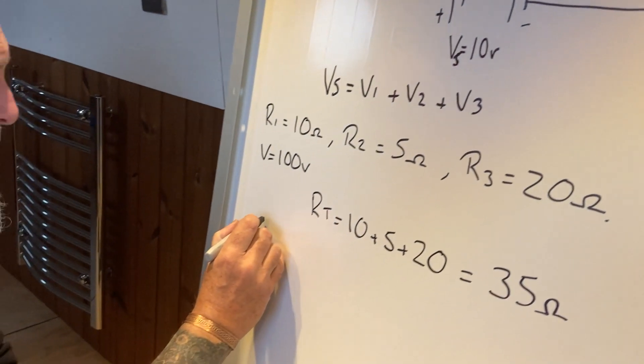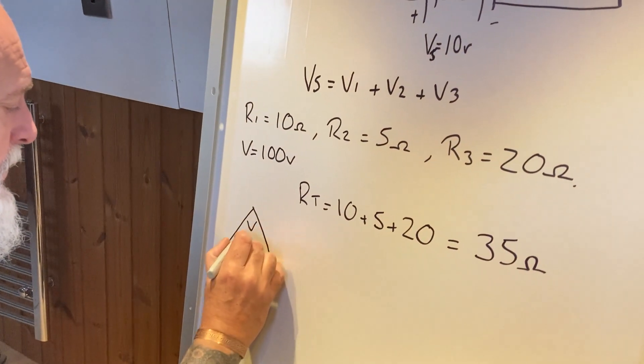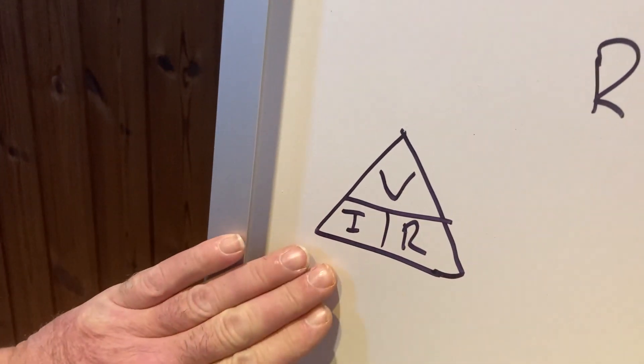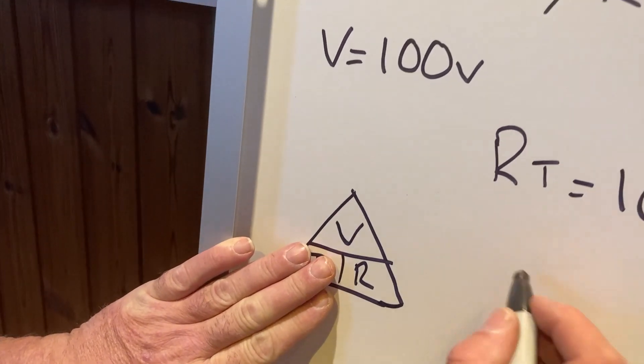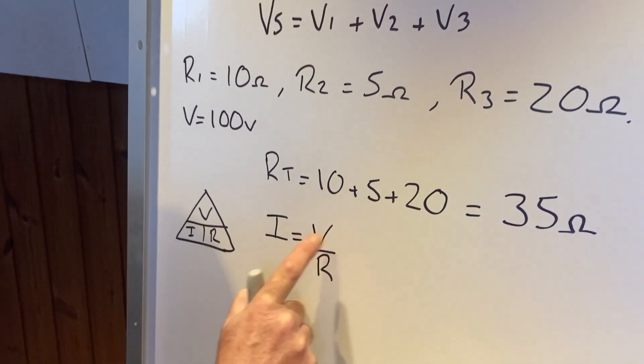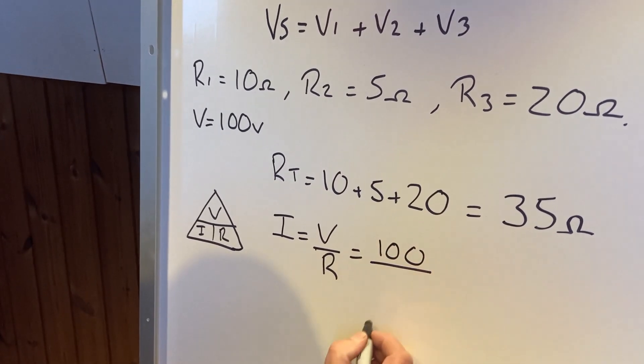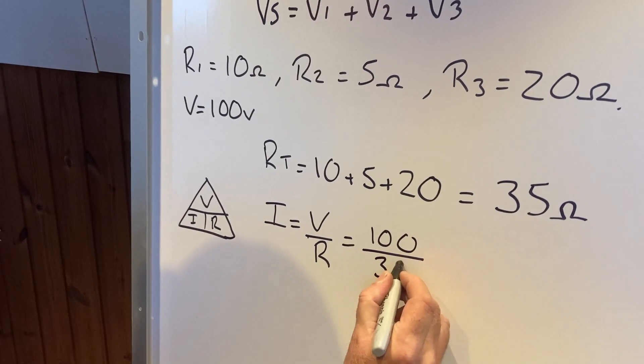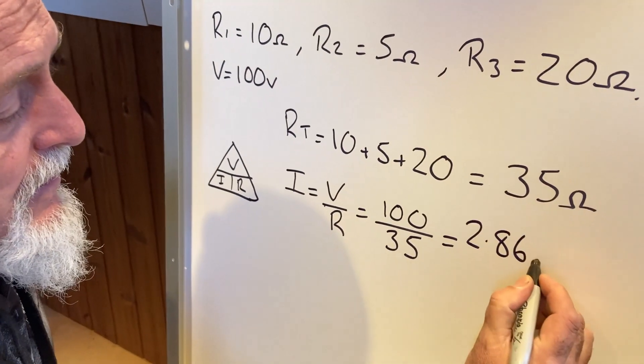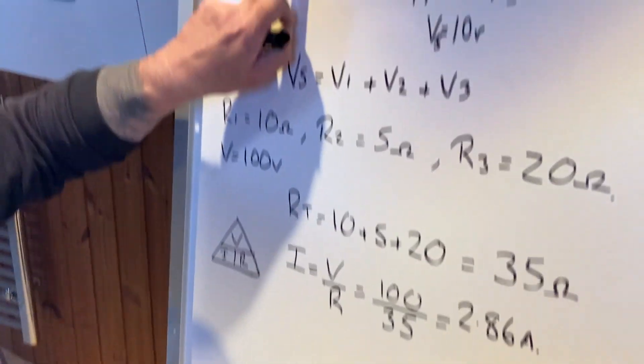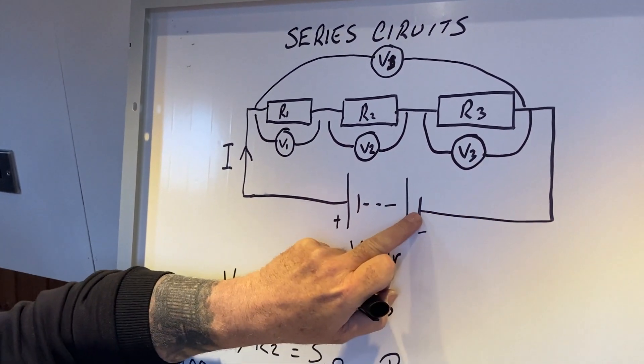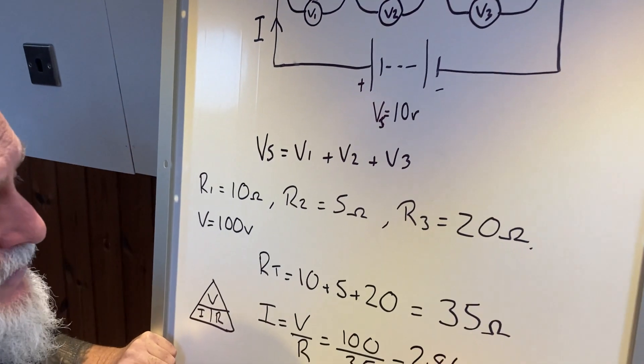Now remember our Ohm's Law from last week. So remember that from last week, hopefully you do: V, I, R. We're looking for the current, so we're going to hide the current, so we have I equals V over R. Okay, we're looking for the current. I equals V, which is 100, divided by R, the total resistance, 35 ohms. And that equals, I need the calculator, so that equals 2.86 amps. So in this circuit up here, 2.86 amps is going through R1, through R2, through R3, and coming back. So that's part of the circuit we've solved there, right there, the current.